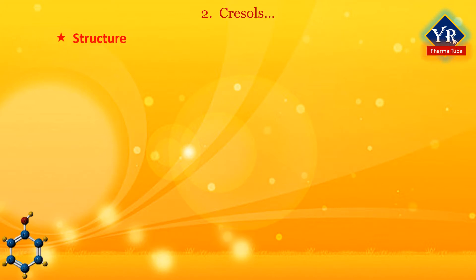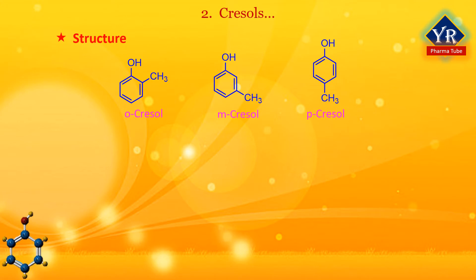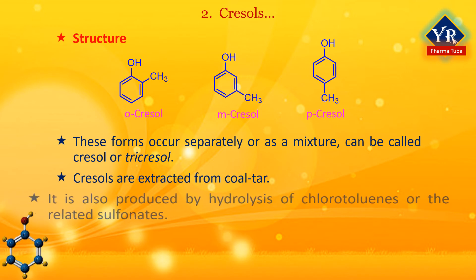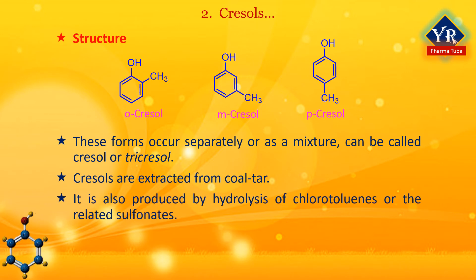Structure and production. In its chemical structure, a molecule of cresol has a methyl group substituted onto the ring of phenol. There are three isomers of cresol: ortho-cresol, meta-cresol and para-cresol. These forms occur separately or as a mixture, also called cresol or more specifically tri-cresol. About half of the world's supply of cresols is extracted from coal tar. The rest is produced by hydrolysis of chlorotoluenes or the related sulfonates. Another method entails methylation of phenol with methanol over a solid acid catalyst often comprising magnesium oxide or alumina; temperatures above 300 degrees are typical. Anisole converts to cresols under these conditions.